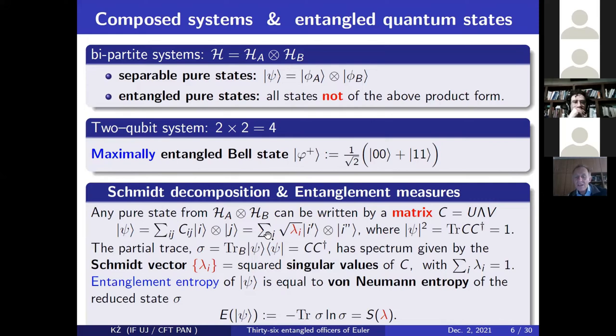And now we can compute singular values of this matrix. Let's denote them by lambda. And they appear here in this so-called Schmidt decomposition. Instead of double sum here, we have a single sum here at the expense of changing both bases into i prime and i double prime. And now, because the state is normalized, all those numbers lambda, let's call them Schmidt values, they sum to unity. So they define a probability vector. This probability vector is nothing else as eigenvalue, so spectrum of partial trace. And then to characterize the degree of mixing of this vector lambda, we use the standard von Neumann entropy.